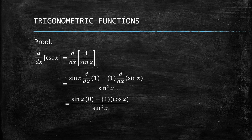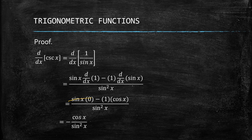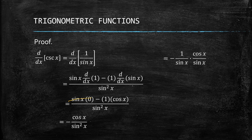The derivative of 1 is 0 and the derivative of sin(x) is cos(x). So sin(x)·0 = 0, and we're left with −cos(x) over sin(x)·sin(x), which we can write as −cos(x) over sin²(x).